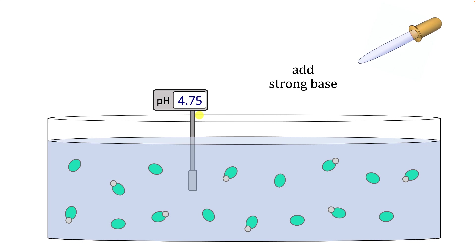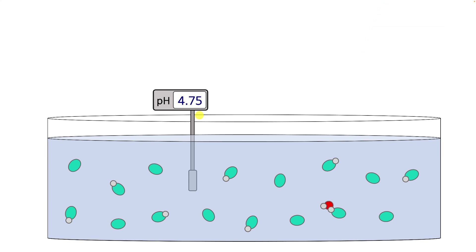Now what happens if we add strong base, which contains hydroxide ions, to this buffer? When the hydroxide ions enter the solution, they will encounter and react with acetic acid molecules. Each hydroxide ion removes the acidic hydrogen from an acetic acid molecule and converts it into its conjugate base, the acetate ion.